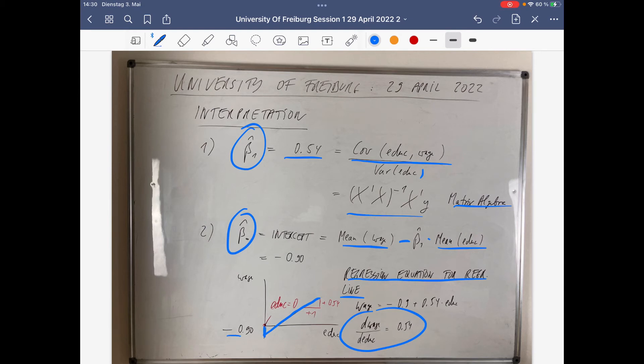Interpretation is, of course, one additional year of schooling yields on average an increase of average hourly wage of 0.54 ceteris paribus.